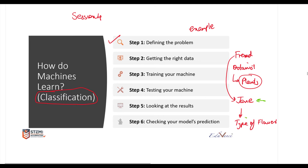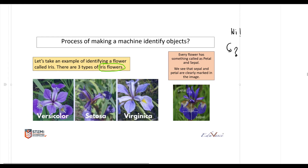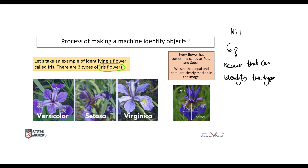Jane is doing research on a particular type of flower called the iris flower. She comes to you and says, 'Hi, can you help me build a machine that can identify the type of iris flower?' Jane knows that you understand artificial intelligence, so she asks if you can help her identify the type of iris flower.